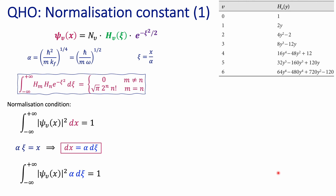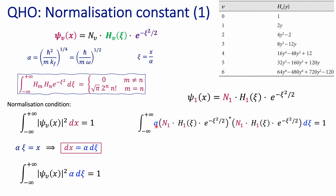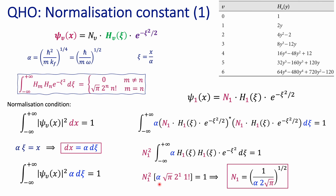For the first excited state, the vibrational quantum number index is 1. The wave function includes the normalization constant, the Hermite polynomial for that state, and the Gaussian function. After the same substitutions — don't forget the alpha from the dx change — and applying the orthonormality condition, the integral gives a value as a multiple of the square root of pi. With 2¹ and 1 factorial equal to 1, you get a normalization constant slightly different from the ground state.